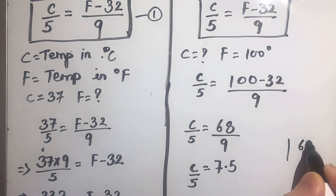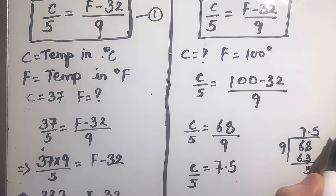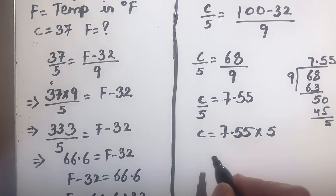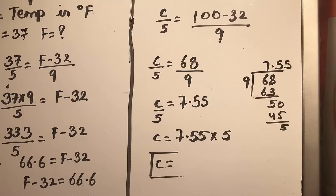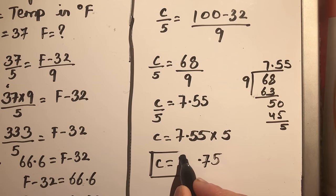Let's verify: 68 divided by 9 — 9 times 7 is 63, remainder 5, so that gives approximately 7.55. So C over 5 equals 7.55, meaning C will be equal to 7.55 times 5. Calculating: 7.55 times 5 is 37.75 degrees centigrade.